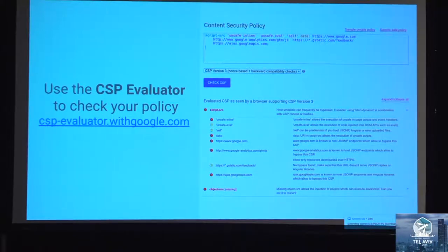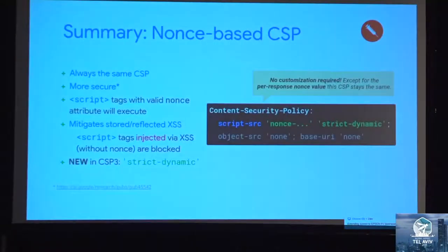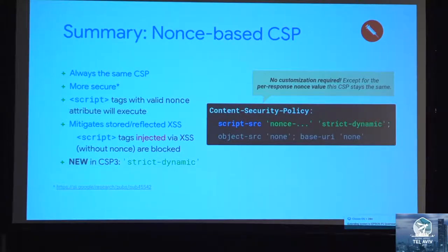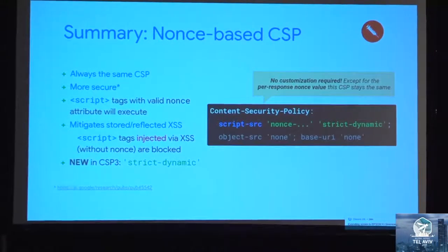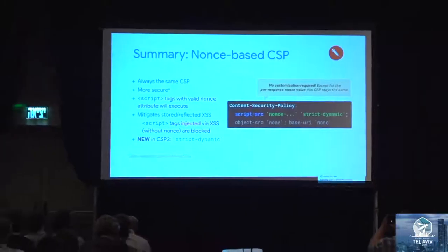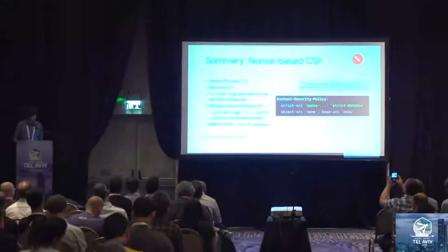We actually use this type of nonce-based policy on over 60% of all outgoing Google text/HTML traffic, across over 100 domains, and it has been quite effective. Just in the last 12 months it blocked 20 high-risk XSS bugs. There's a nice write-up on csp.withgoogle.com with a step-by-step guide. I also strongly recommend using the CSP Evaluator to spot common bypasses in a policy. With the new CSP 'strict-dynamic' keyword, you can use nonce-based CSP even when you have third-party JavaScript that loads resources, like payment integrations or CDN widgets.